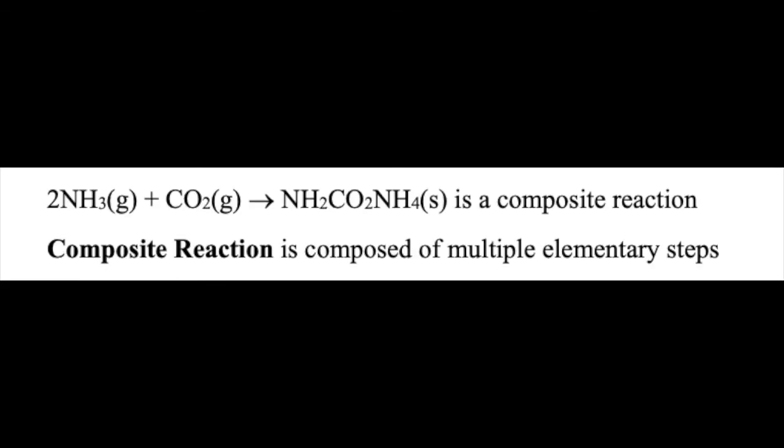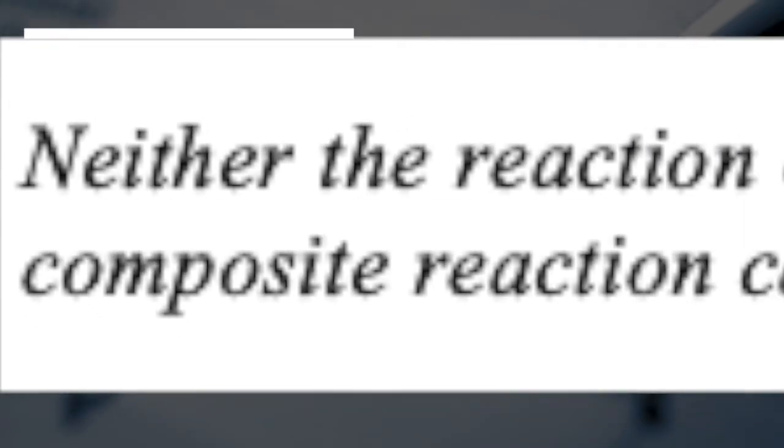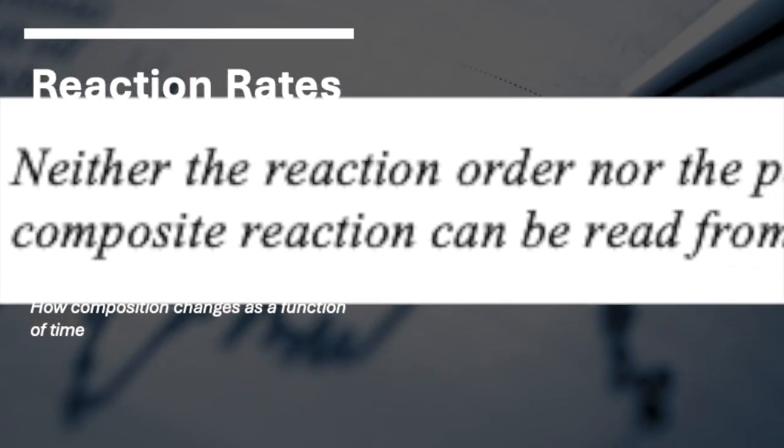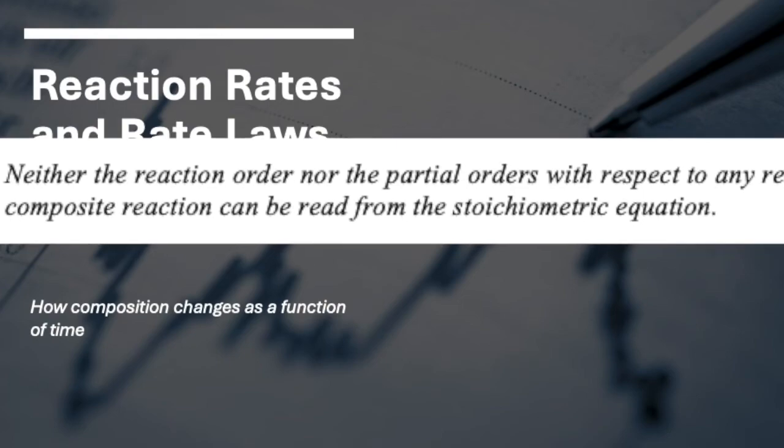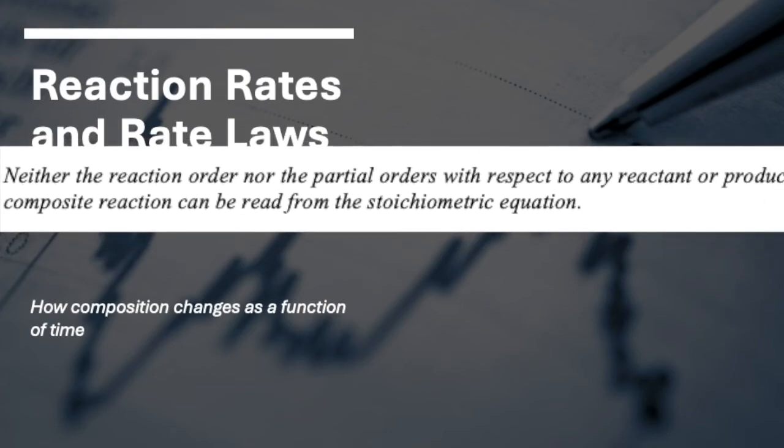A composite reaction is a reaction with a mechanism that involves two or more elementary steps. Neither the reaction order nor the partial orders with respect to any reactant or product of a composite reaction can be read from the stoichiometric equation. When fractional orders arise or when products appear in the rate law, you can be sure that the reaction mechanism is complex and or that the system does not possess a well-defined rate determining step.